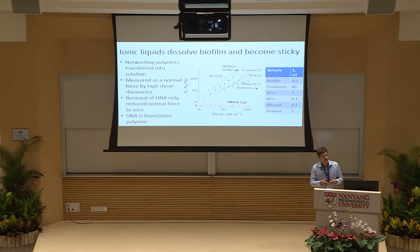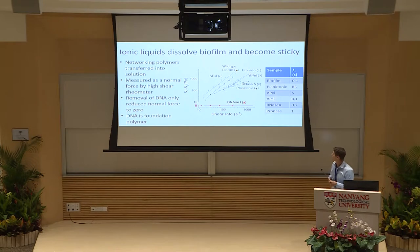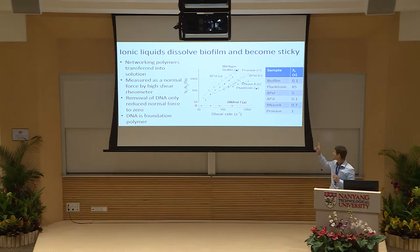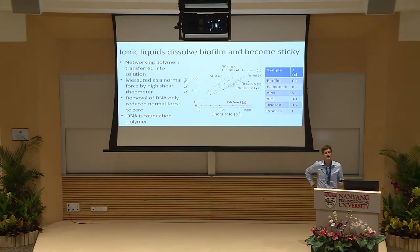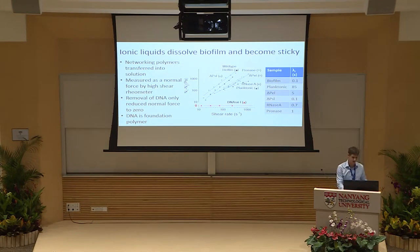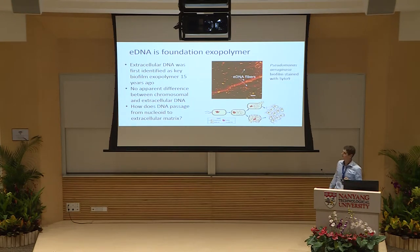We used this approach to identify the contribution of individual exopolymers to the networking effect, using genetic knockdown mutants for the various putative polysaccharides, and knocking out protein, RNA, and DNA by selective enzymatic hydrolysis. They all contributed as seen by differences in relaxation time. However, the only treatment that completely removed the networking effect — reducing normal force to zero — was DNA, specifically extracellular DNA. From that we concluded that extracellular DNA was this foundation polymer.